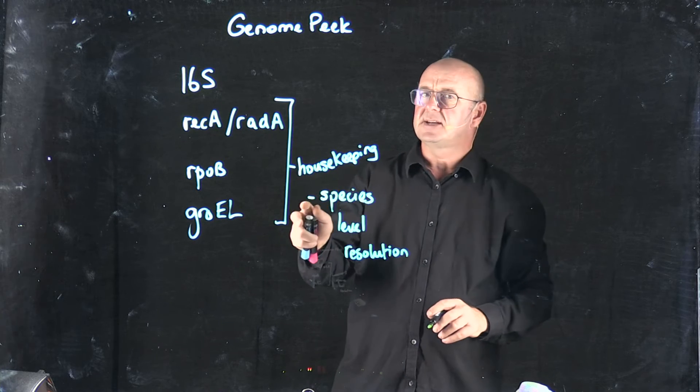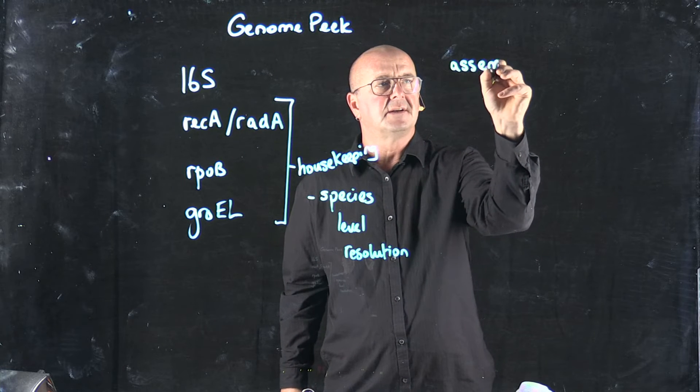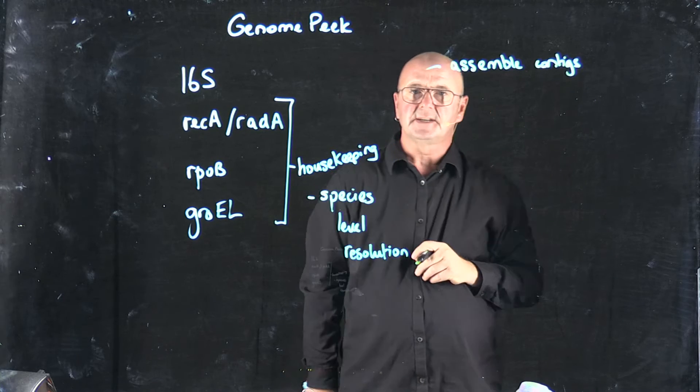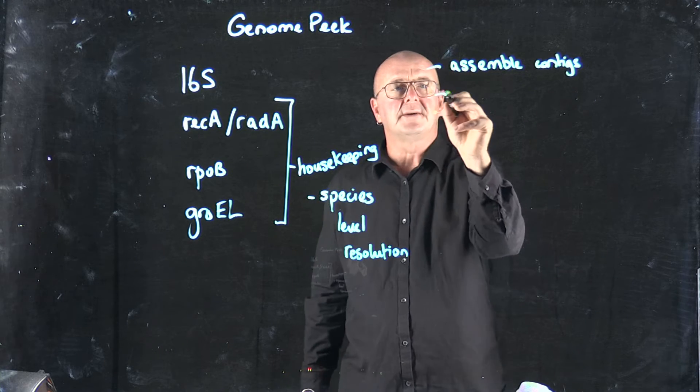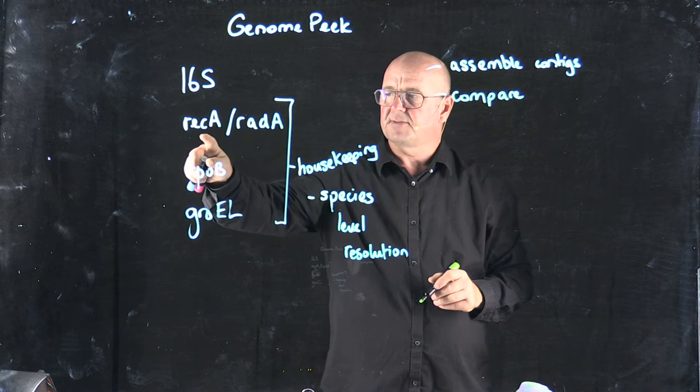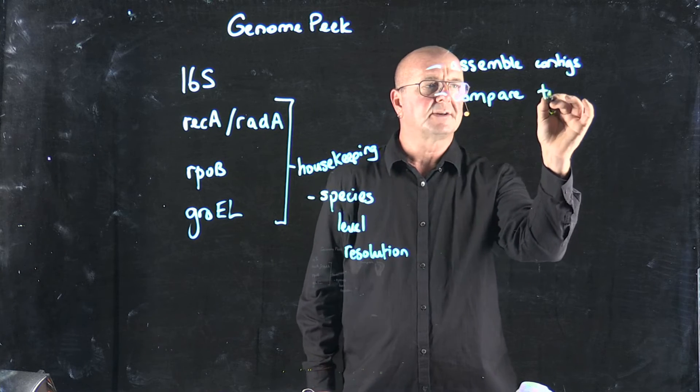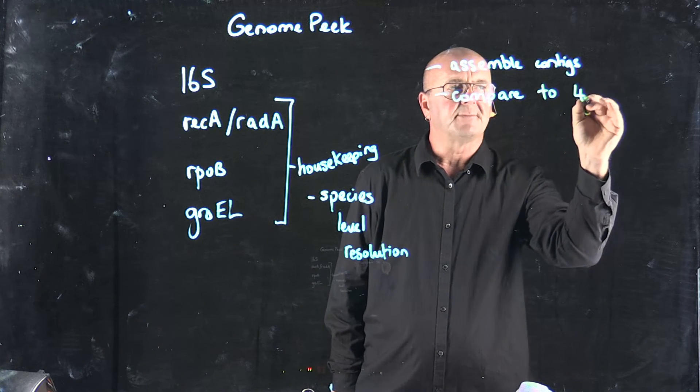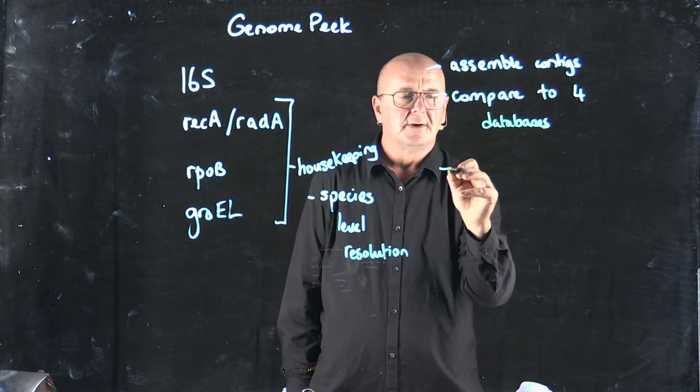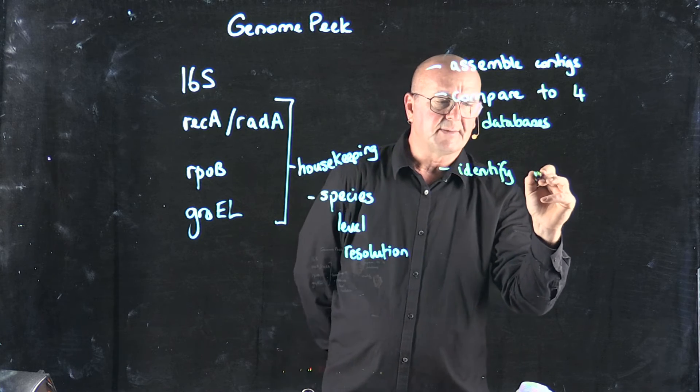So what GenomePeek does is it takes your reads, we assemble contigs, or if you've provided us contigs, we just use those contigs that you've provided. We compare to the database of 16S, of RecA, of rpoB, and of GroEL, and we do that separately. So we have four different databases. And based on that comparison, we can identify whether your sequence is contaminated or not.